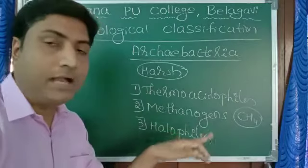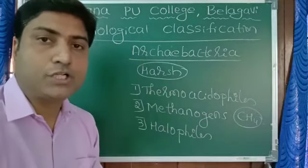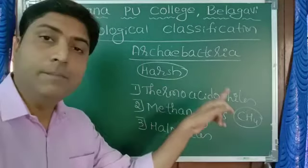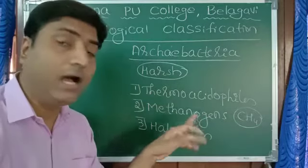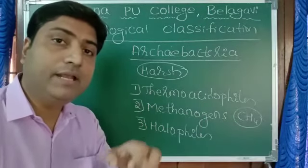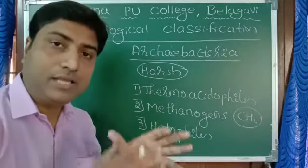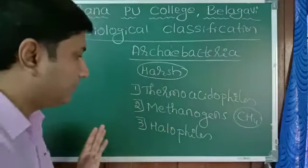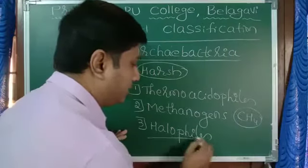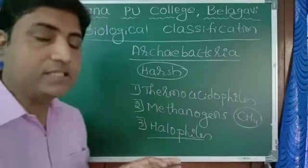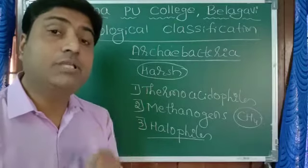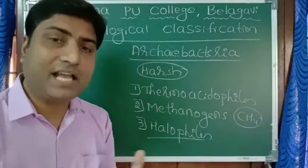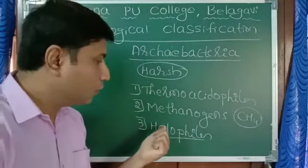These bacteria, they help in the production of biogas called as methane. They are also called as bacteria which live in marshy area. In the marshy area, these methanogens are present. Then halophiles. Halophiles means the bacteria which are present in salty area, in salt condition. So those are halophiles.